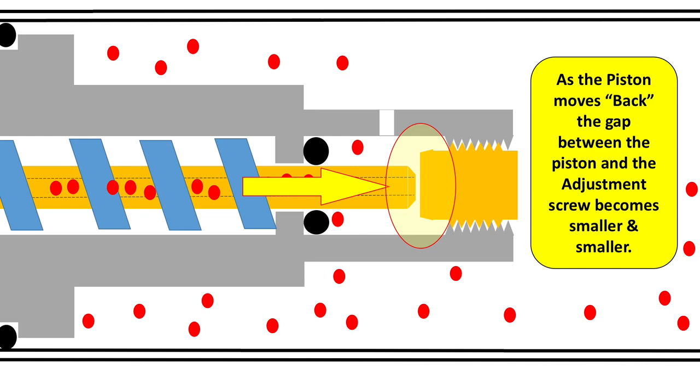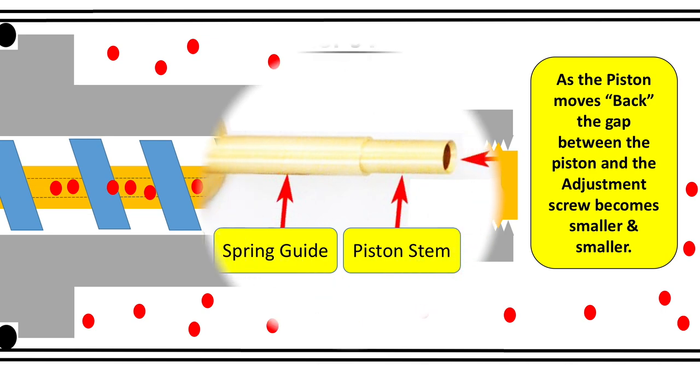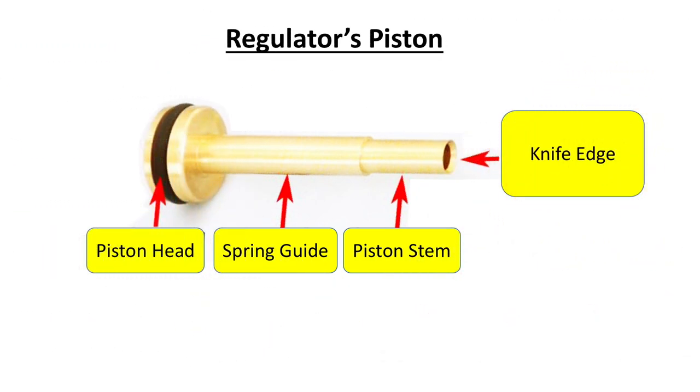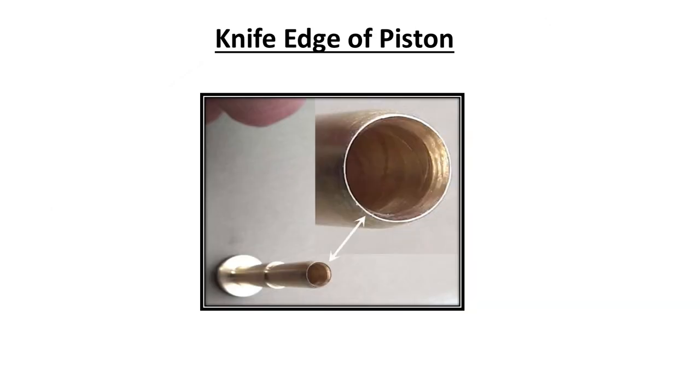Before I continue my explanation, let's have a look at a photo of a regulator piston. If you look at this photo here, starting from the left, we have the piston head with its o-ring, the spring guide, the piston stem, and more specifically what we're focusing on now is the knife edge. Look at this knife edge. Here's a close-up photo of the knife edge of a piston—very small surface area, very sharp. And the purpose of this knife edge is to seal itself onto the adjustment screw.